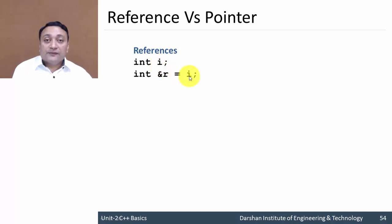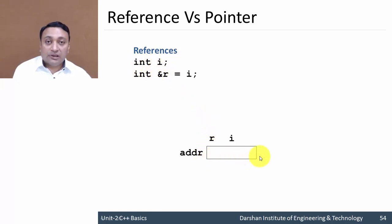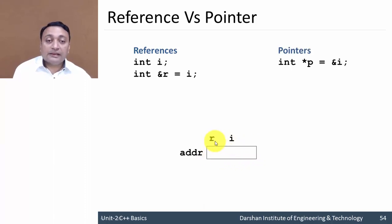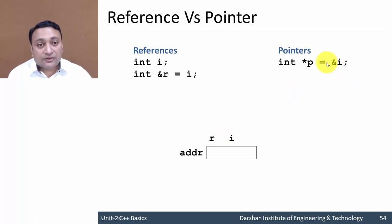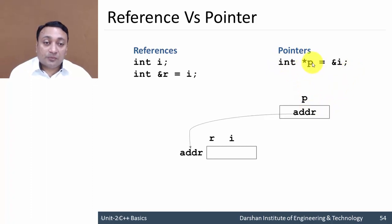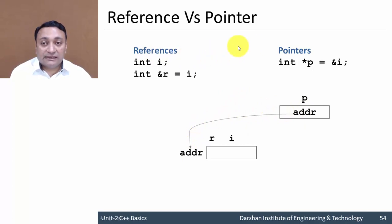Let us understand the difference. We have variable 'i' and a reference 'r' for it. The first statement allocates one memory location with some address, labeled as 'i'. The second statement creates a different name 'r' for that same location. In the case of a pointer, the address of 'i' is stored in 'p', which allocates a separate memory location for 'p' and stores the address of 'i' there.